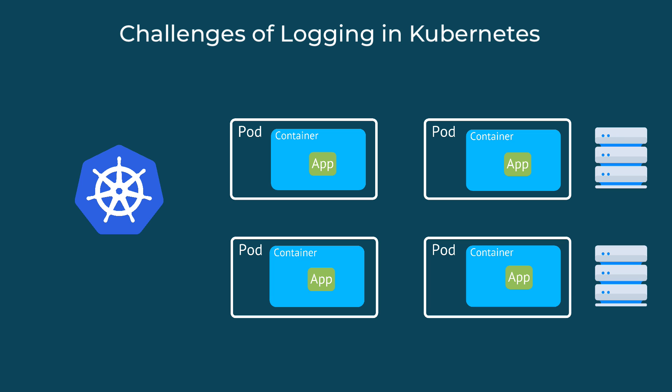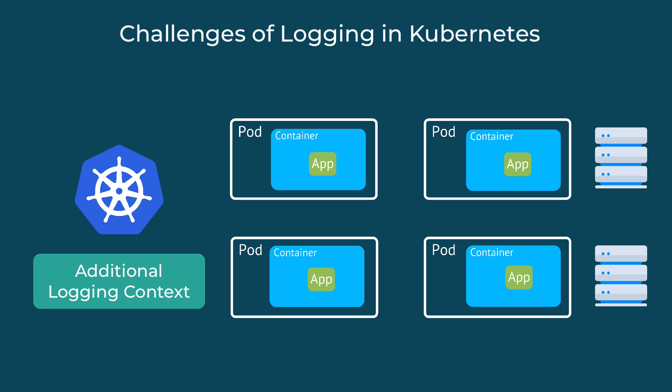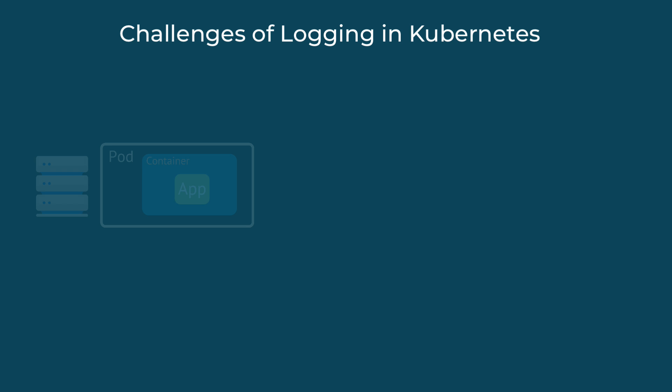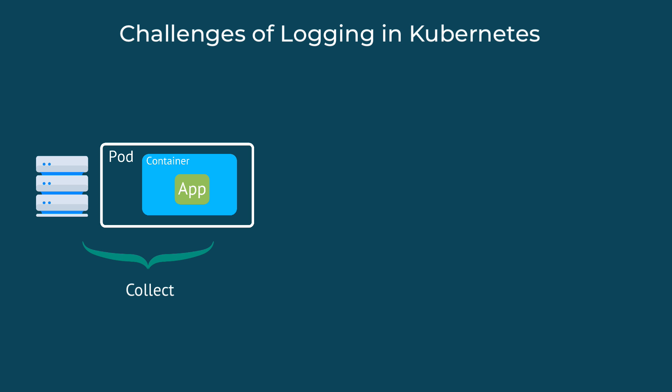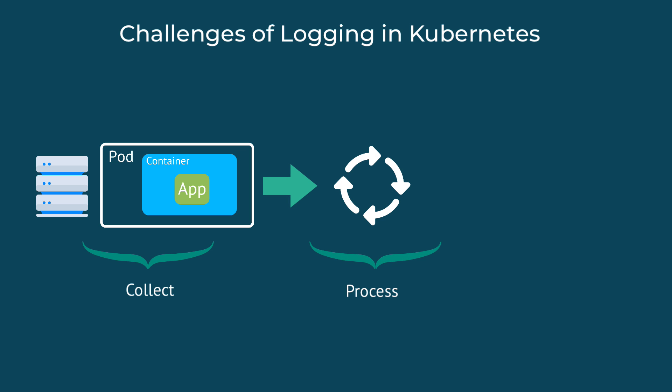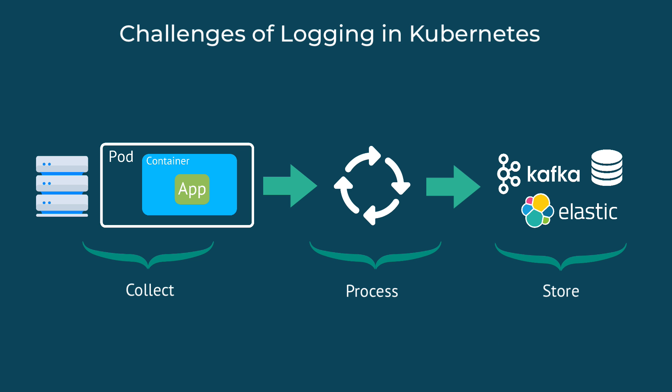In addition to the log message and the application name itself, we have all this additional information about where the log is coming from. So if you have five replicas of the same application, you want to know which pod replica on which node produced this log. The challenge is to collect this data from different sources, process it, parse all the values, identify where they are coming from, and parse them into key-value pairs so they can eventually be stored in Elastic or Kafka for data analysis.